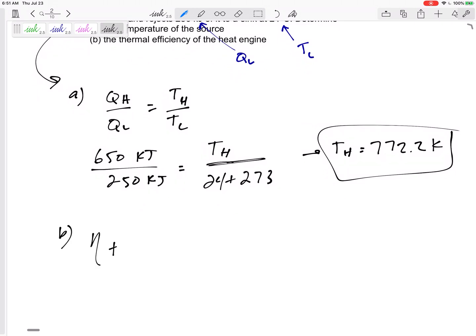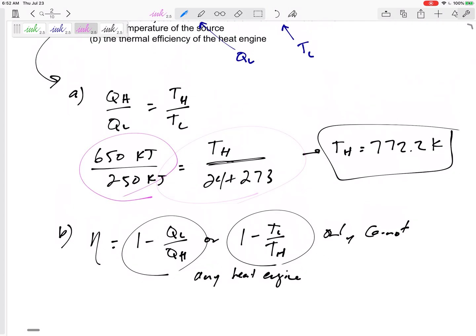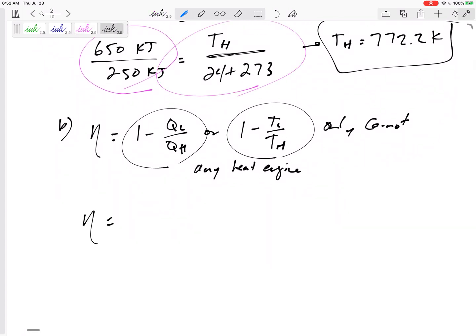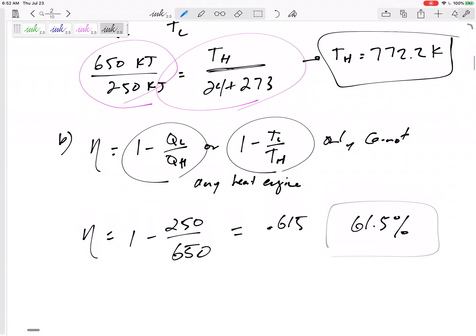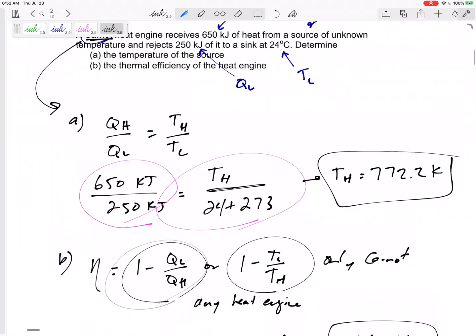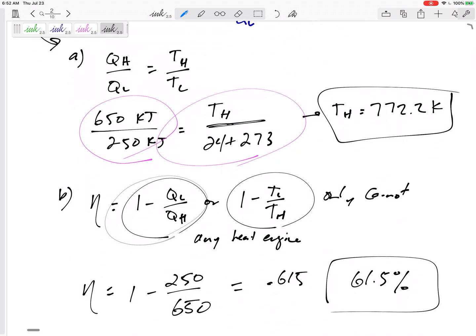The thermal efficiency equals 1 minus Q_L over Q_H, or 1 minus T_L over T_H. This is only for Carnot. This is any heat engine. They should give me the same ratio, the same answer. Here I've got 0.615. I don't care if you leave this 0.615 or 61.5 percent. Be careful - efficiency for a heat engine, these are different than refrigerators or heat pumps.